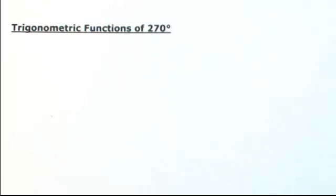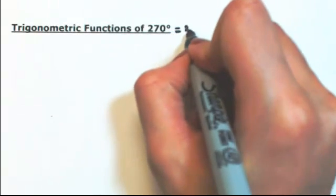Finding the six trig functions of 270 degrees, or in radians, 3 pi over 2.